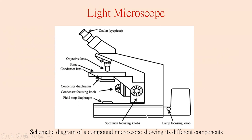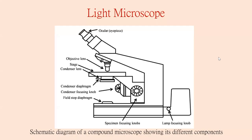We can focus on the specimen by the specimen focusing knob. This is the schematic of a compound microscope showing its different components.